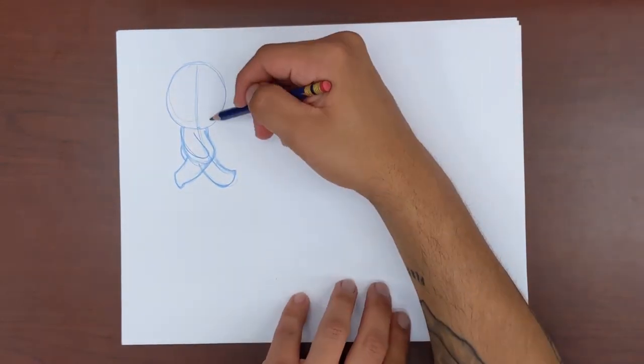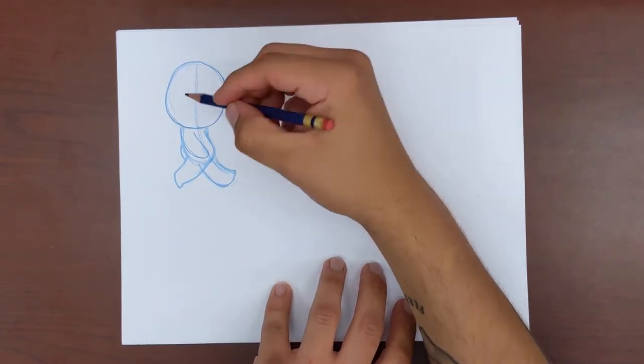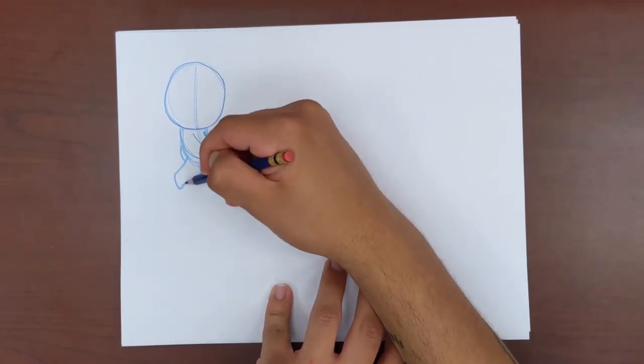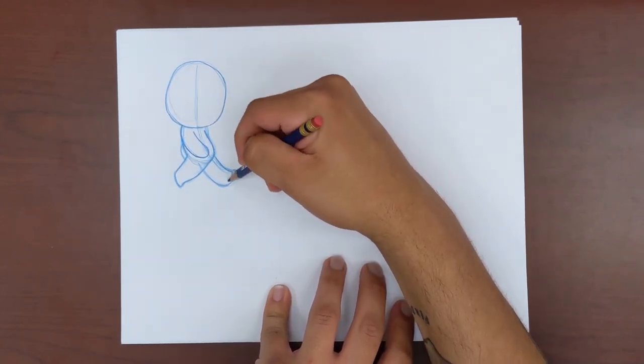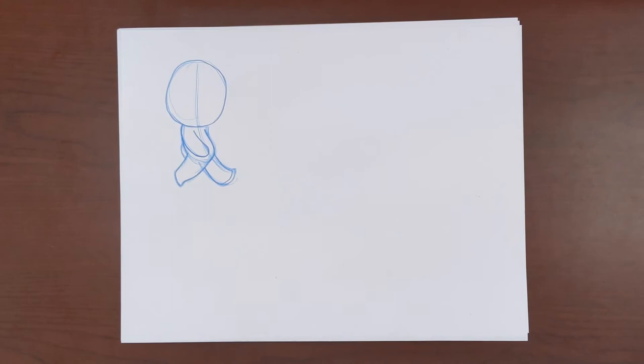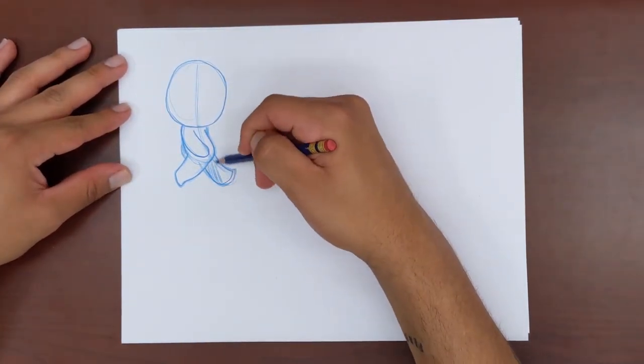When you're done sketching your characters, you can go back with your pencil and start to darken their lines a little bit. To help you differentiate between their limbs as well, you can also go back and shade in their far side limbs, just like so.